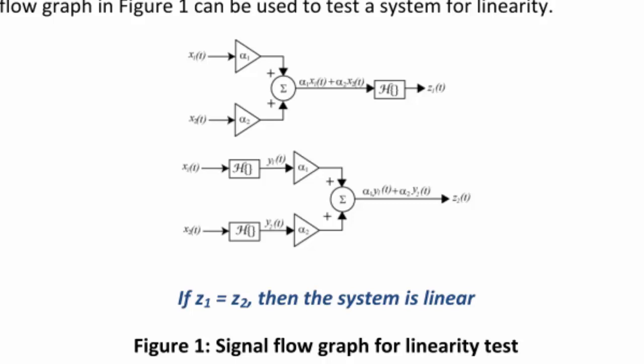For the second row of the signal flow graph, you take x1(t) and send it through the function to produce y1(t). You take x2(t) and send it through the function to produce y2(t), then multiply those outputs by alpha_1 and alpha_2. This produces the sum alpha_1 y1(t) plus alpha_2 y2(t), which gives z2(t). If z1 equals z2, you can say that the system is linear.